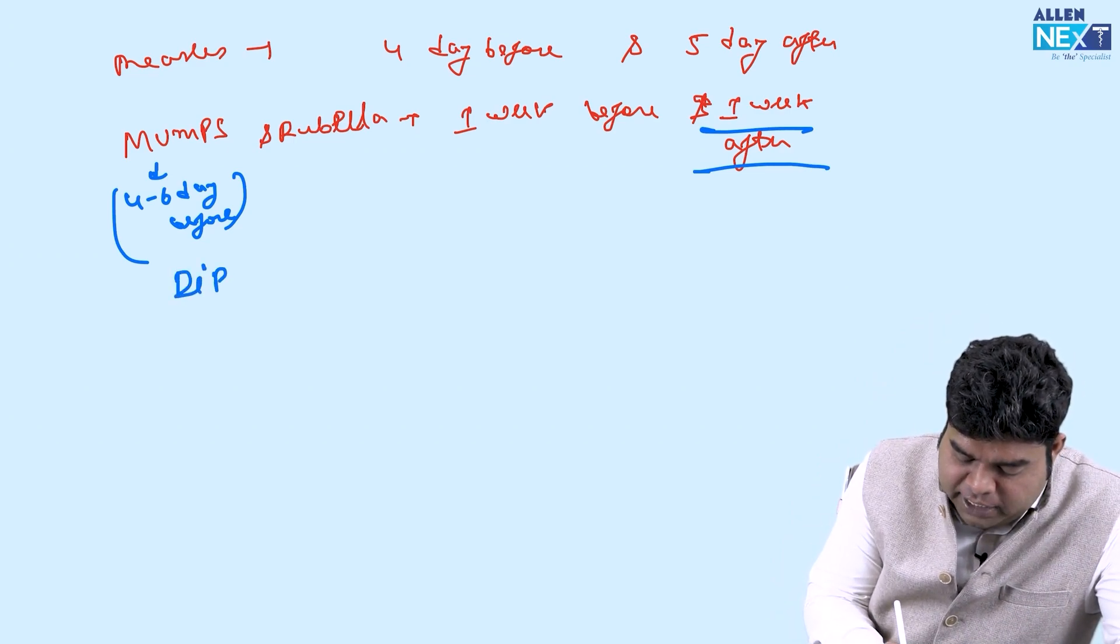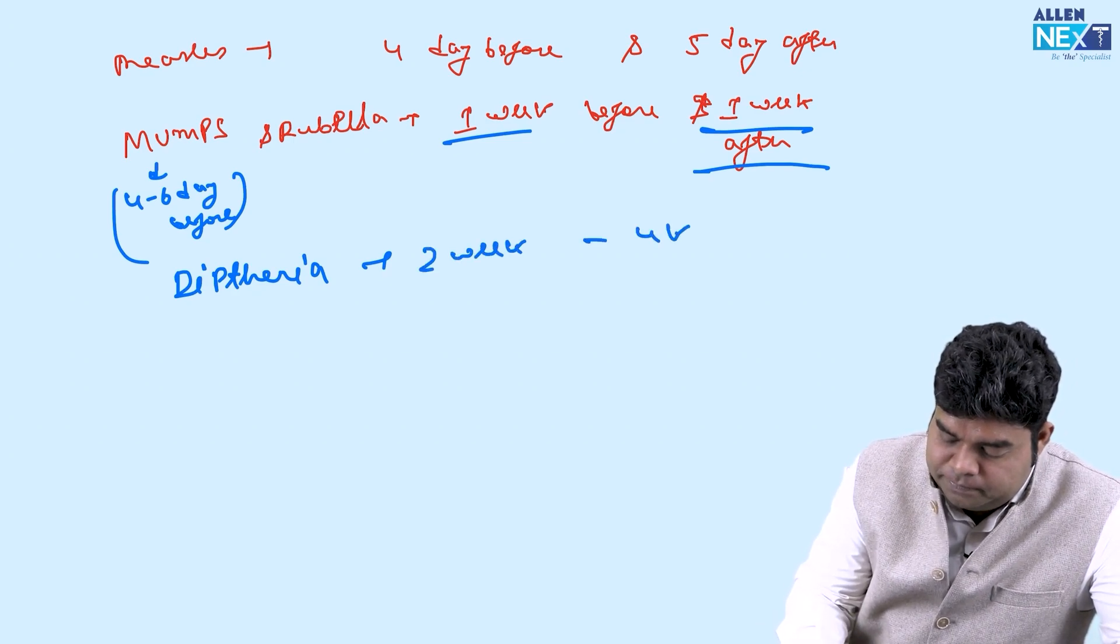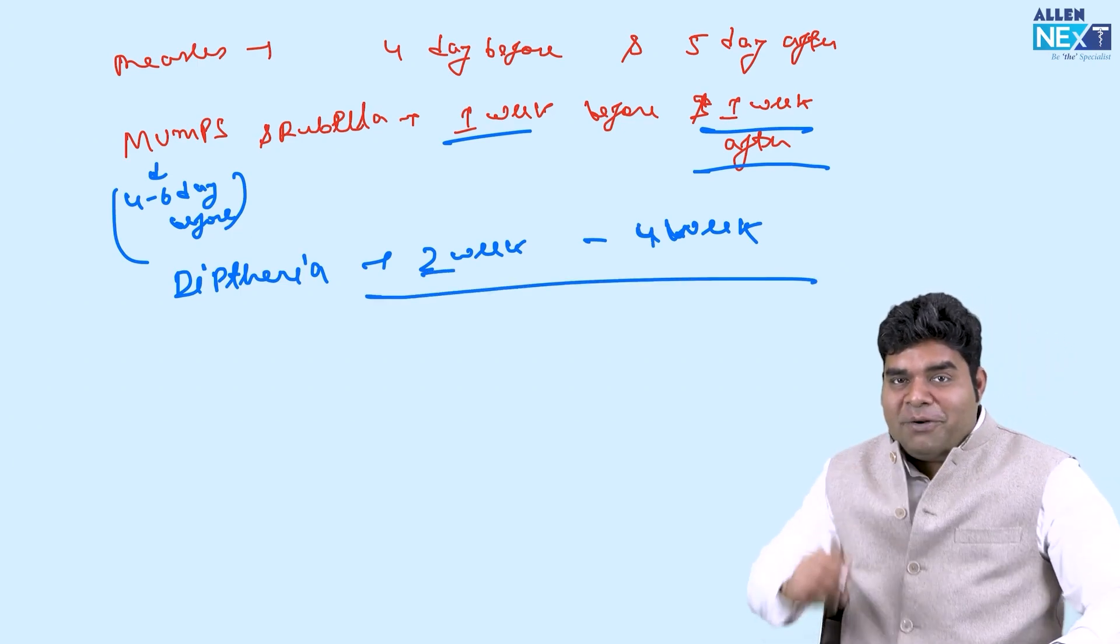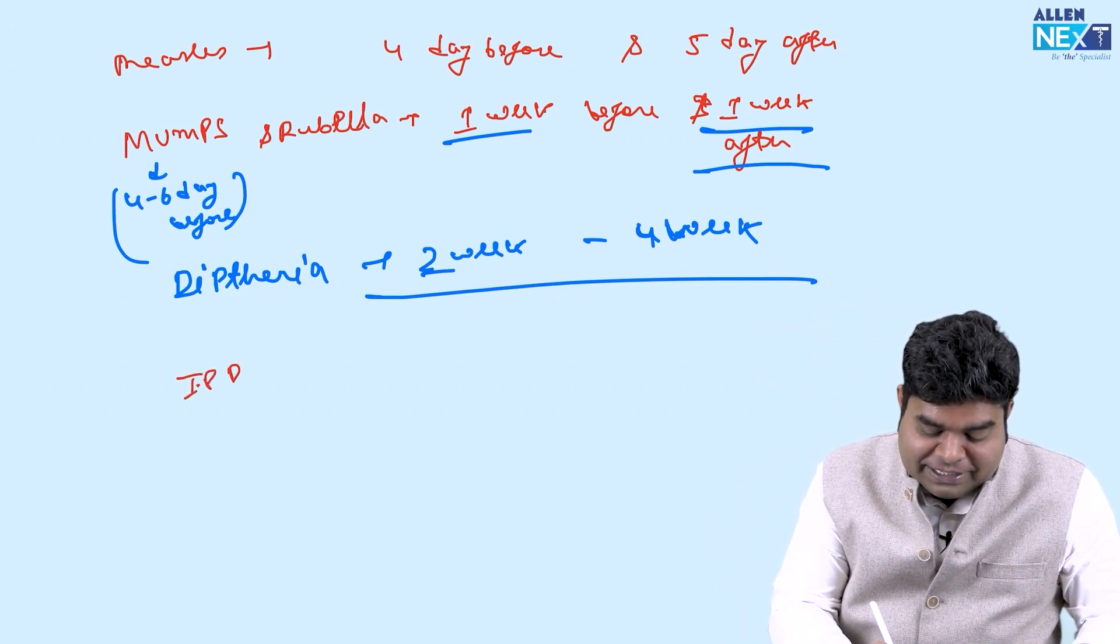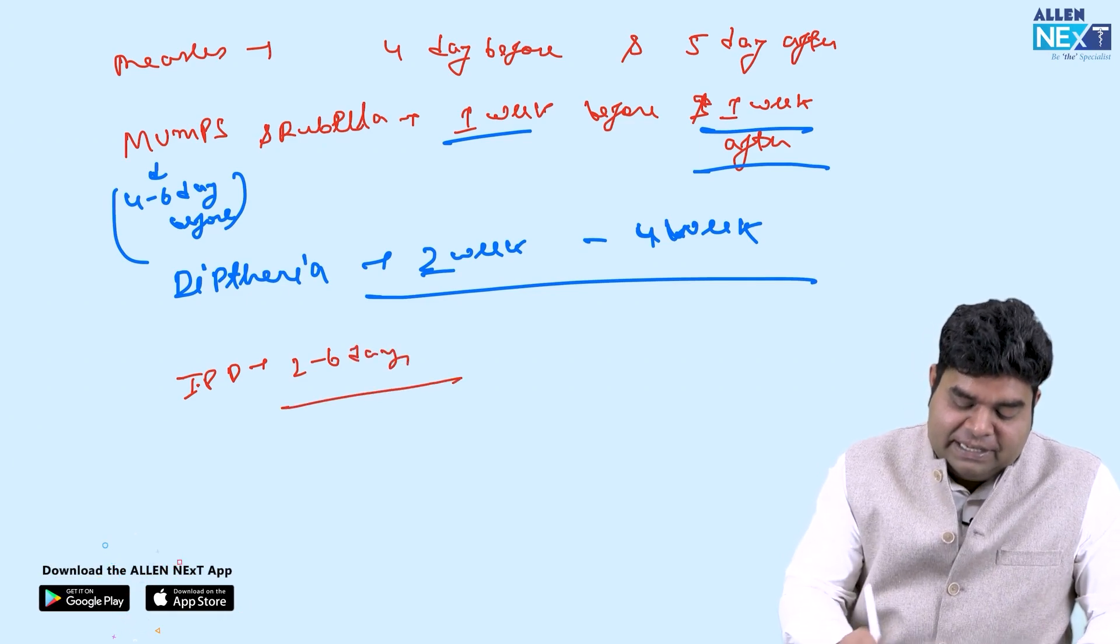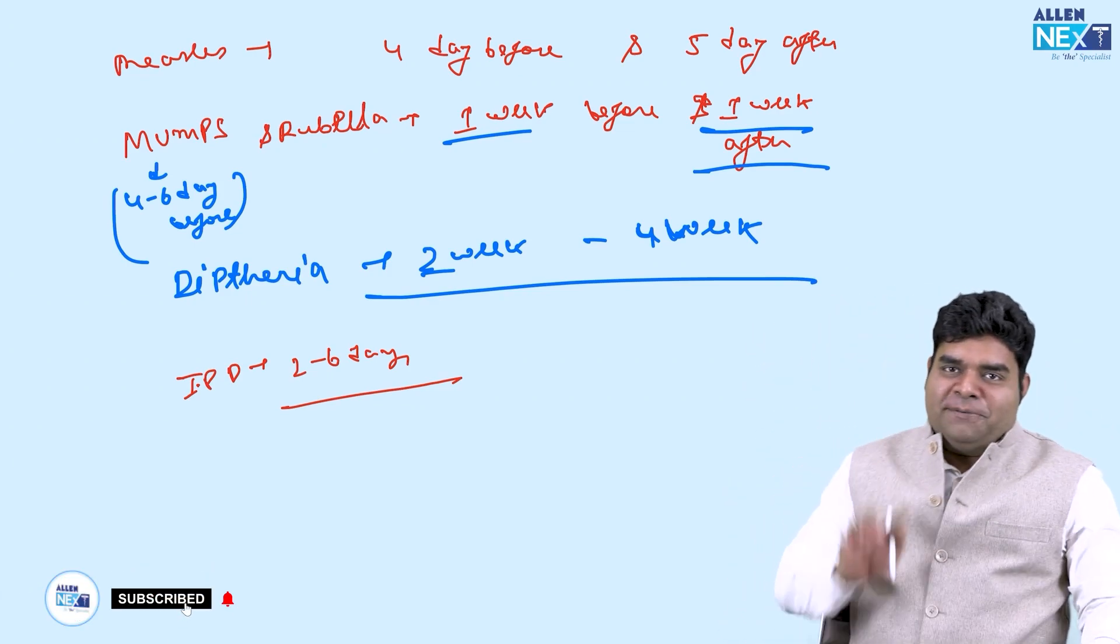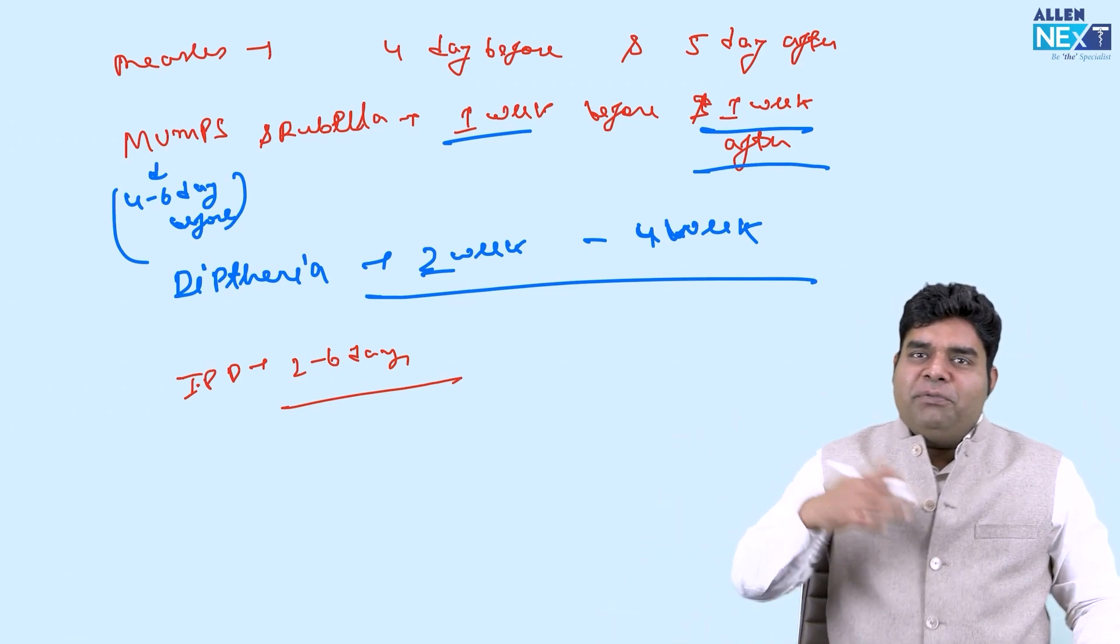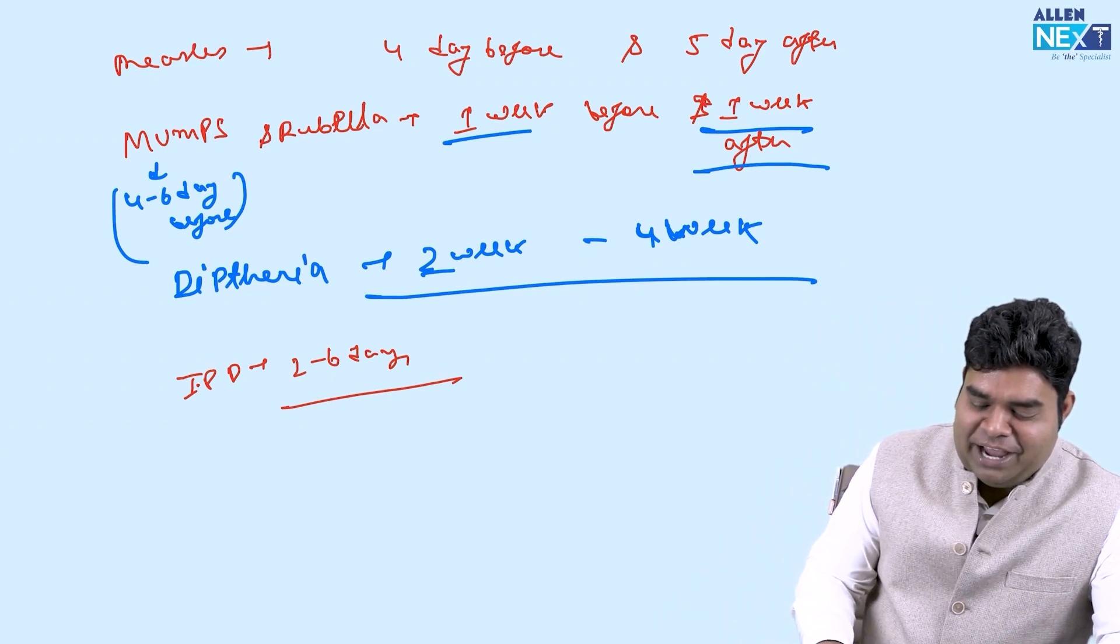After mumps and rubella the last is diphtheria which is formed by adding this, so it is 2 weeks to 4 weeks. Remember what was the incubation period for diphtheria? The incubation period for diphtheria was 2 to 6 days and period of infectivity is 2 to 4 weeks. Do remember these 4: 2-5 for chicken pox total 6 days isolation, 4-5 for measles, 1 week before 1 week after for mumps rubella, and 2 to 4 for diphtheria. I hope you will remember it all. If you remember it in a flow you can remember it all.